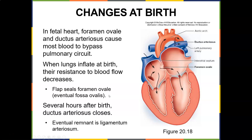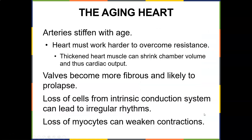At birth, the fetal heart has the foramen ovale and ductus arteriosus, which cause most blood to bypass the pulmonary circuit since the baby gets its blood supply from the mother. When the lungs inflate at birth with that first breath, the increased resistance should cause a flap to close and seal the foramen ovale. Several hours after birth the ductus arteriosus should close and becomes a ligament in adults. If these fail to close, it is monitored and may require surgery.